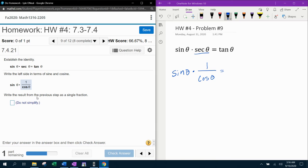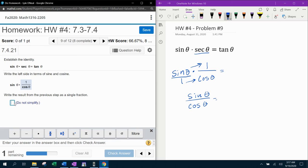Now, write the result from the previous step as a single fraction. All right, so what does that mean as a single fraction? It means they want me to go ahead and do the multiplication. So if I convert sine theta into a fraction, I do that by putting it over one. And then to multiply fractions, I multiply straight across.